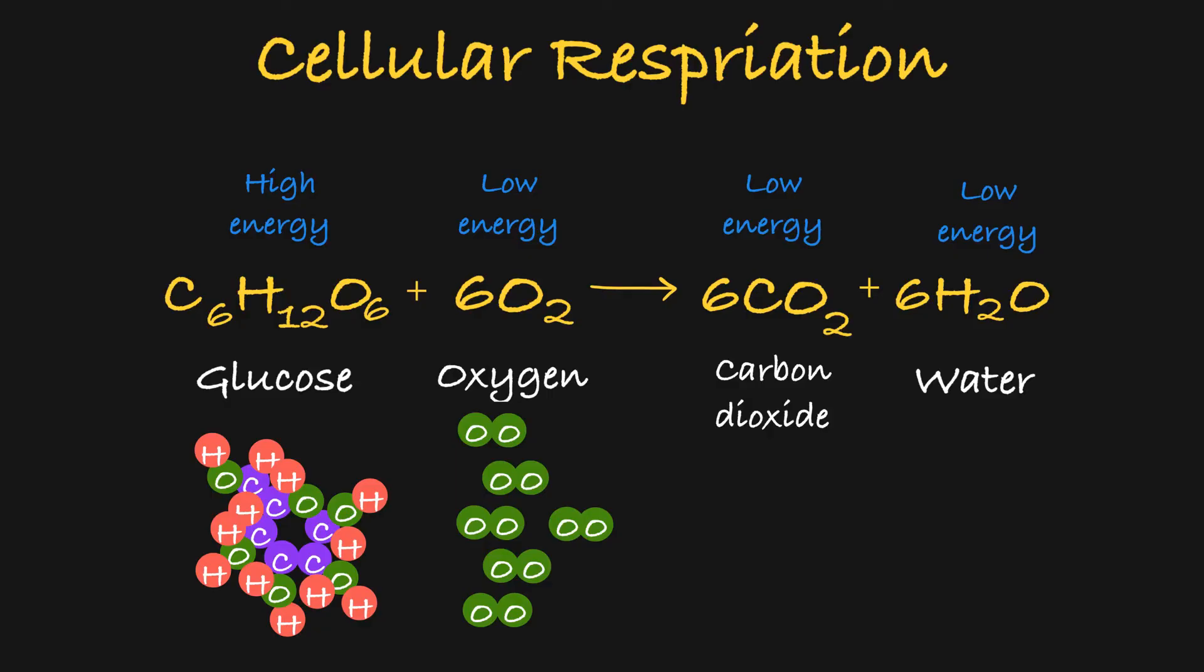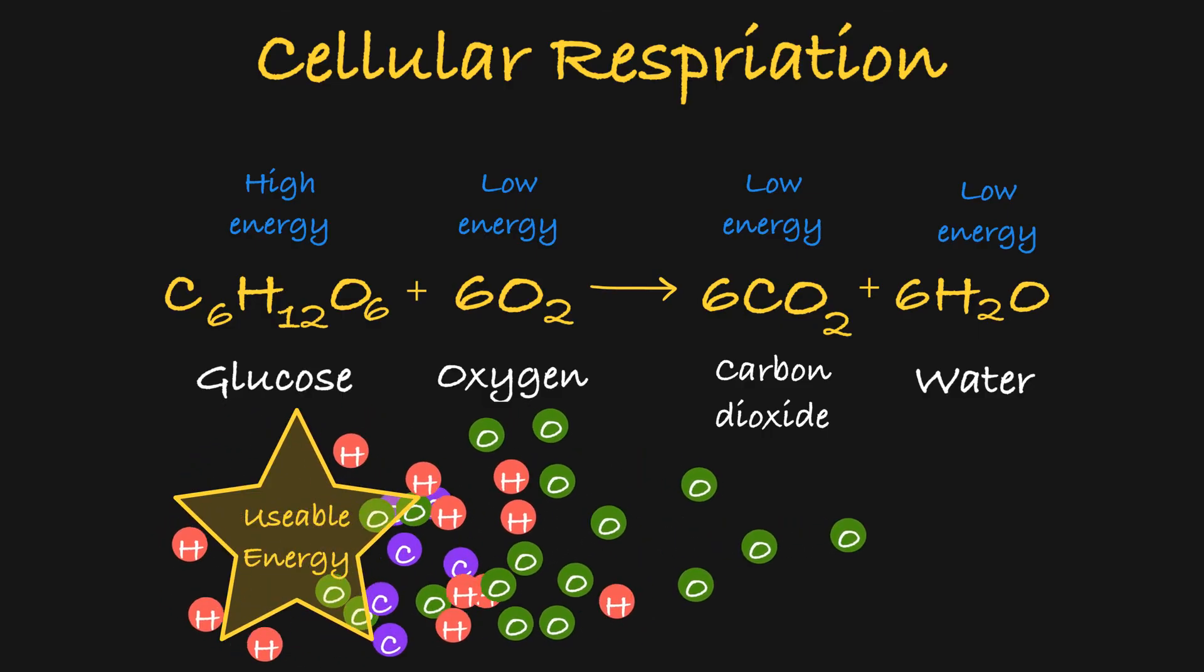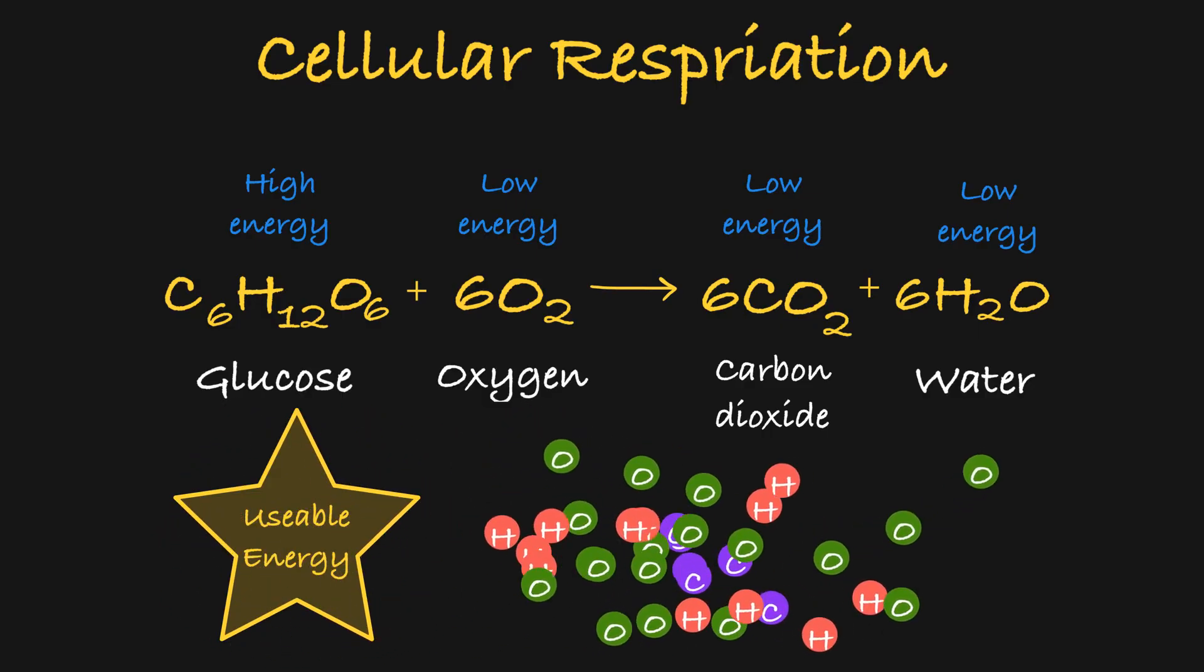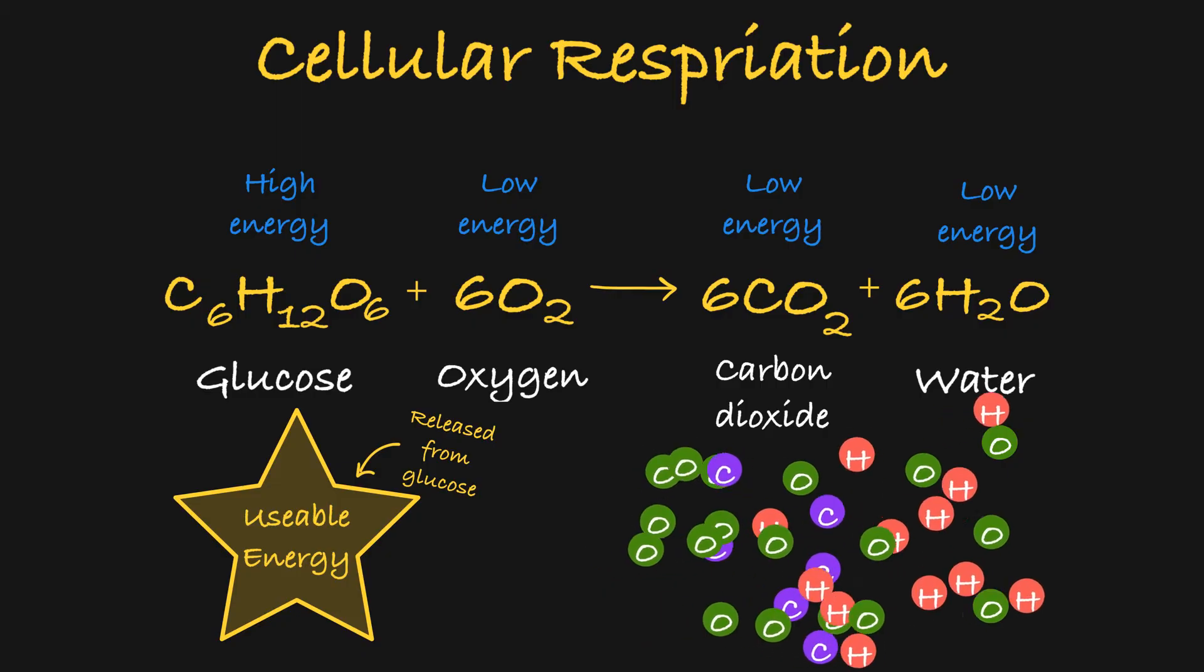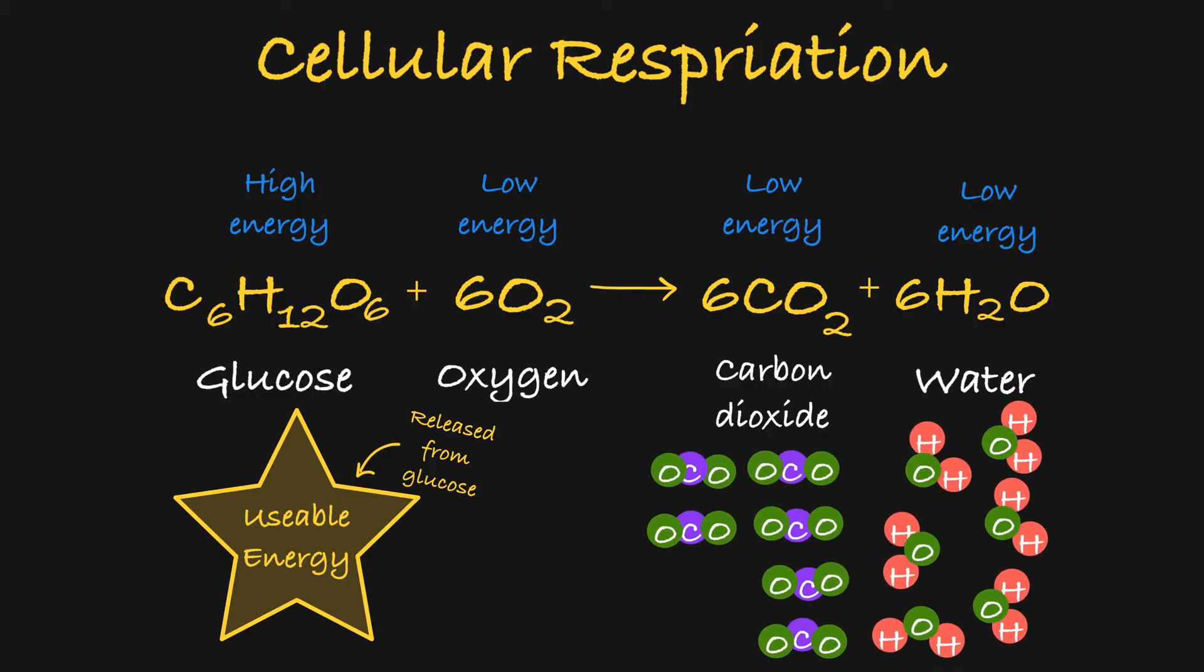What is basically happening in this reaction is that you are using oxygen molecules to break glucose apart and to take the energy that it's storing, and then rearrange its atoms into lower energy molecules that you will then release. Your cell then uses that harvested energy to do work.